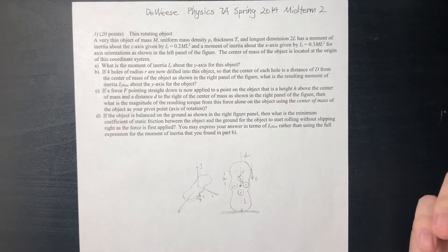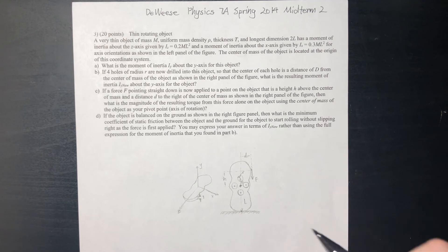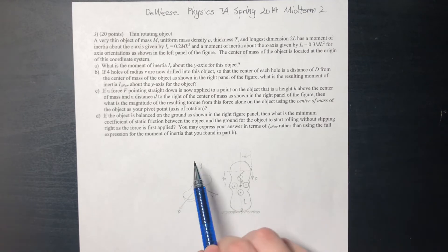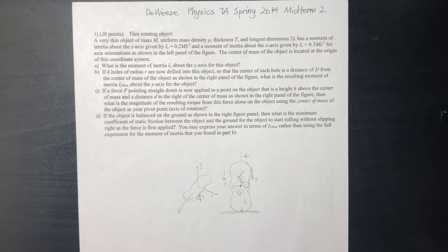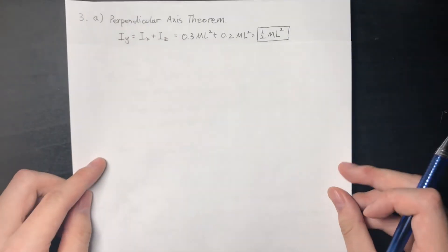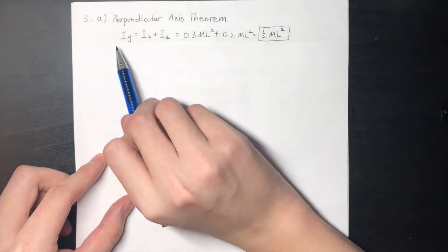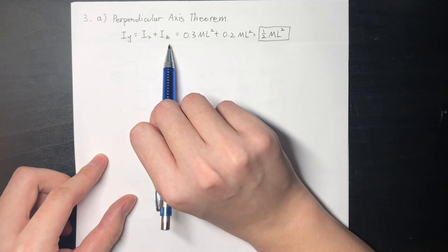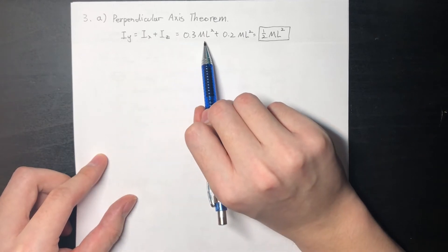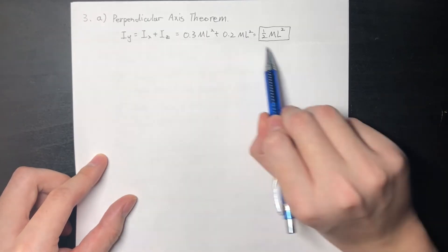Part A asks: what is the moment of inertia I_Y when it rotates about the y-axis? Because the object looks like a planar object and we are given I_X and I_Z, we can quickly apply the perpendicular axis theorem. The rotation about the y-axis is the sum of I_X and I_Z, which are given in the question, and adding them gives 0.5 mL squared.